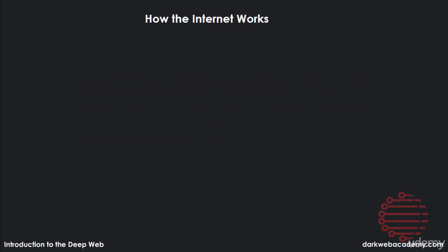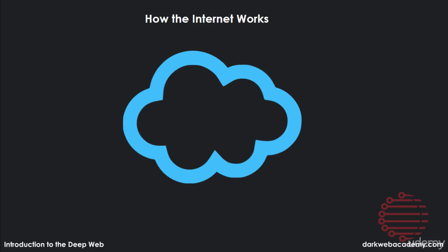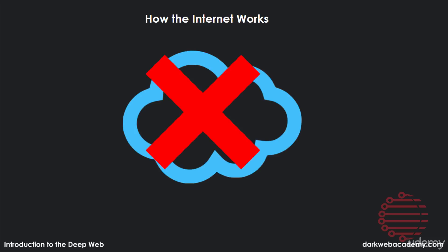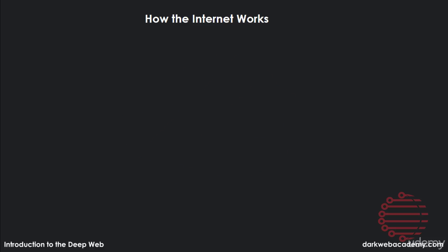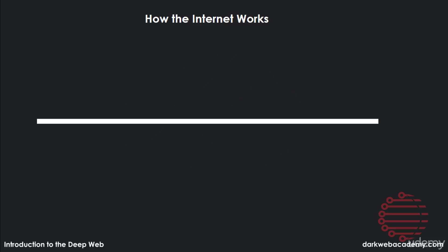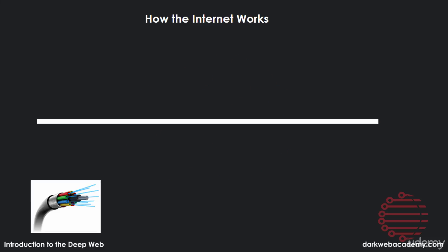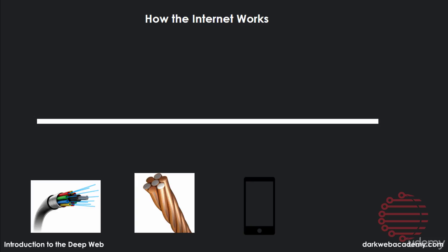When most people think of the internet, they think of a cloud. However, this is wrong. Even with today's modern cloud computing, it's not a cloud — the internet is more of a wire. This wire is actually in the ground, made of fiber optics, copper cable, cell phone networks, or satellite networks.